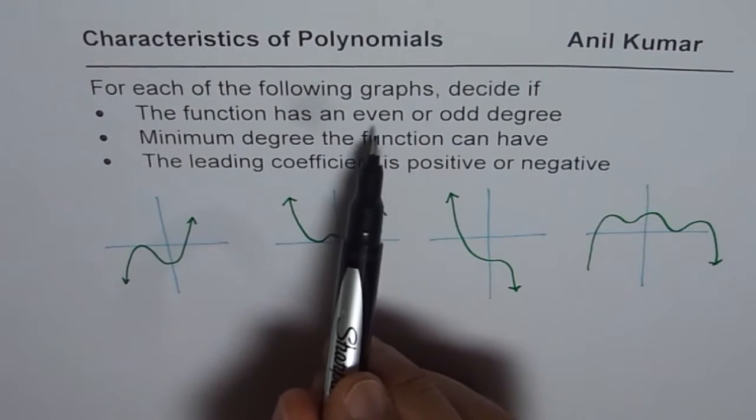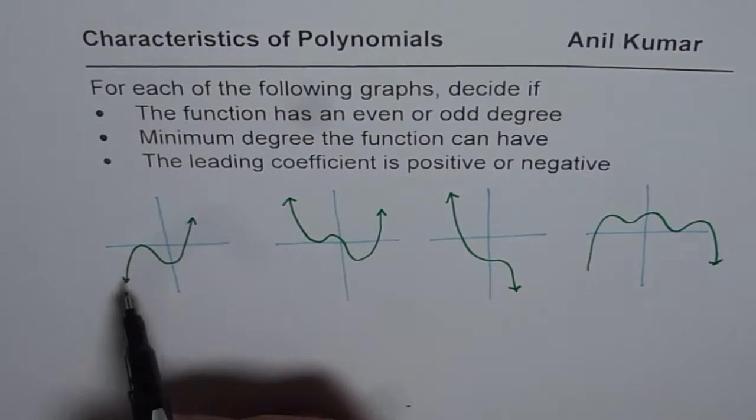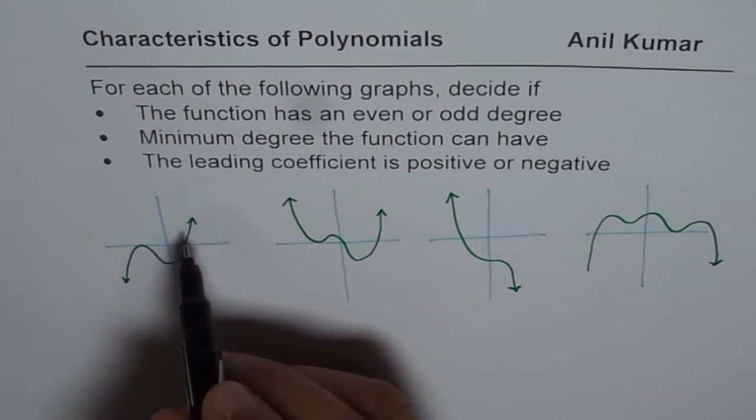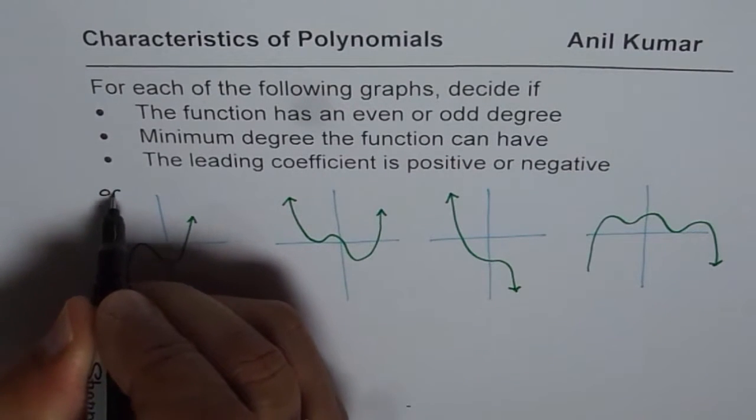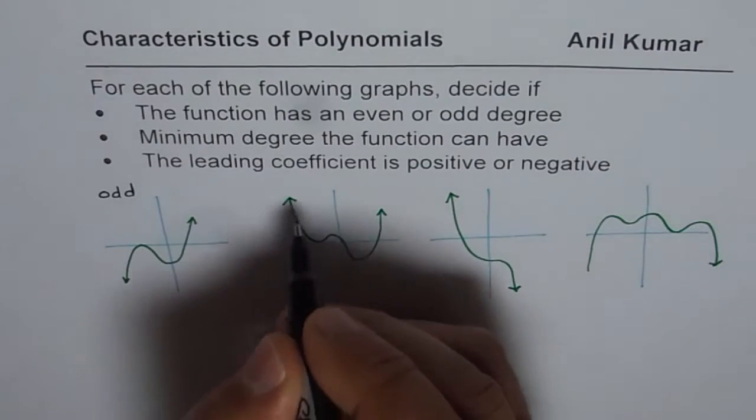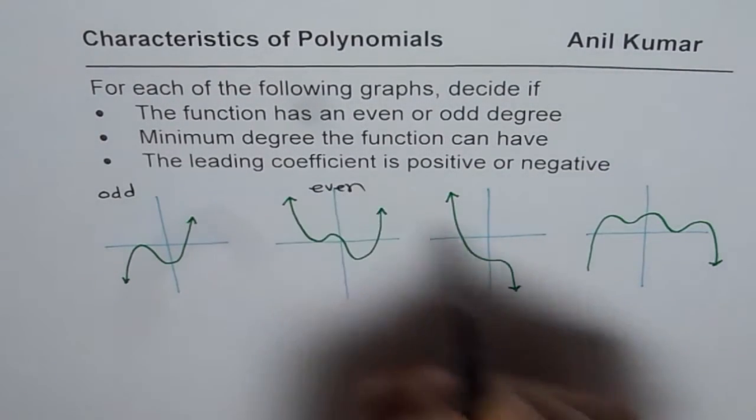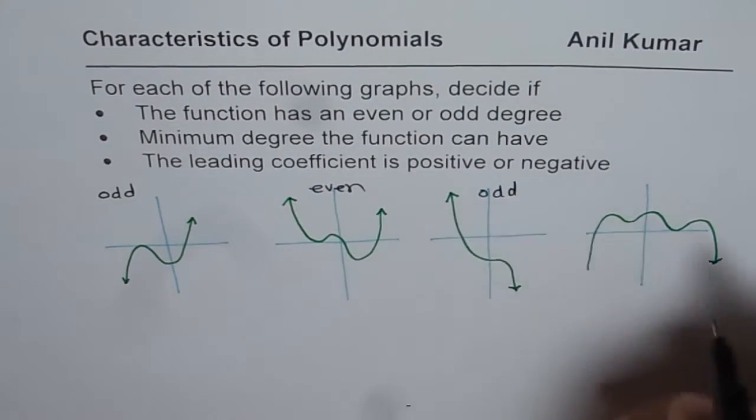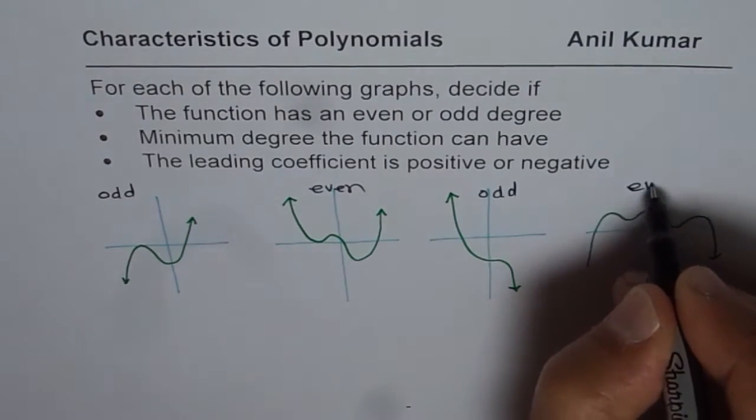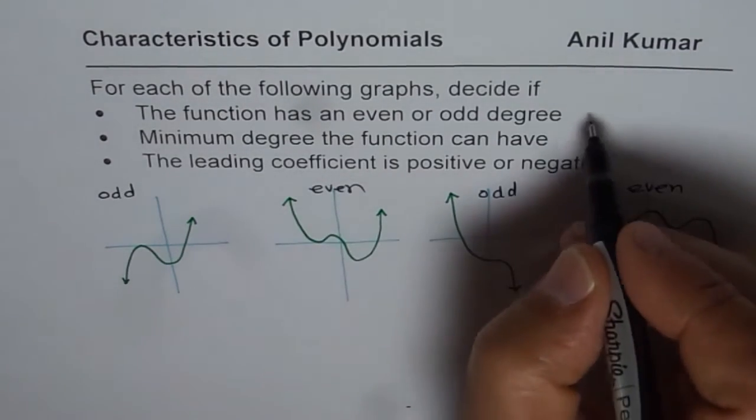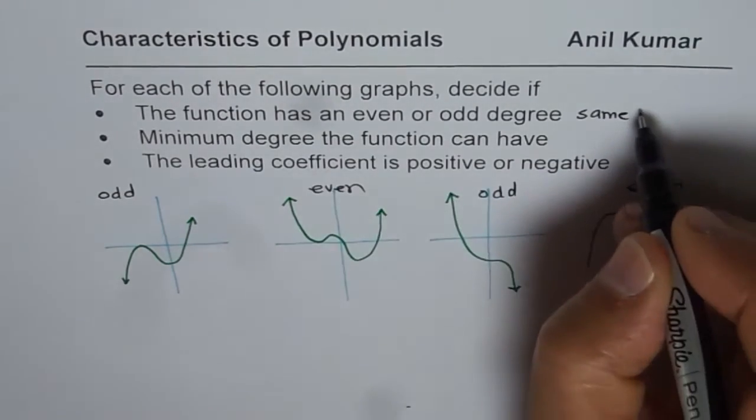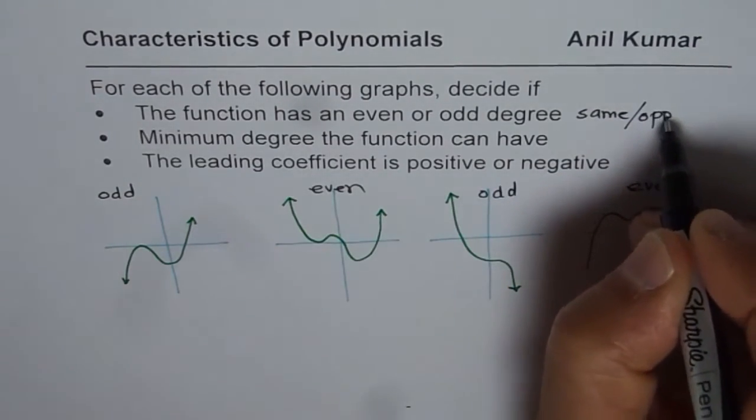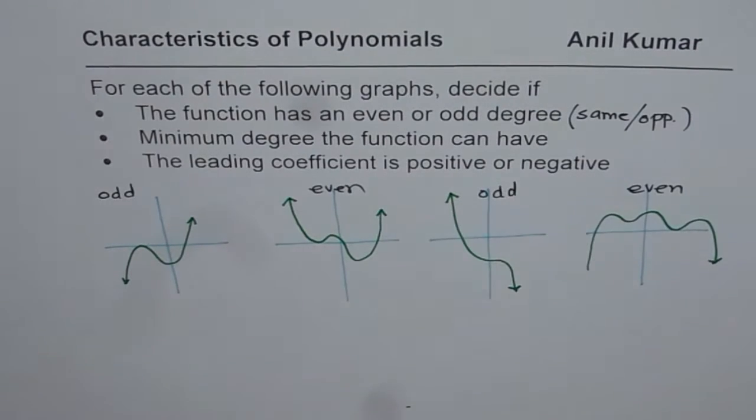So, when we say even or odd, we can decide from the end behavior. If it is opposite ends, like in this case, then it is odd. Same ends means even. Opposite ends means odd. So, you have to decide same ends means even, and opposite ends, that is the end behavior, which will give you odd degree.